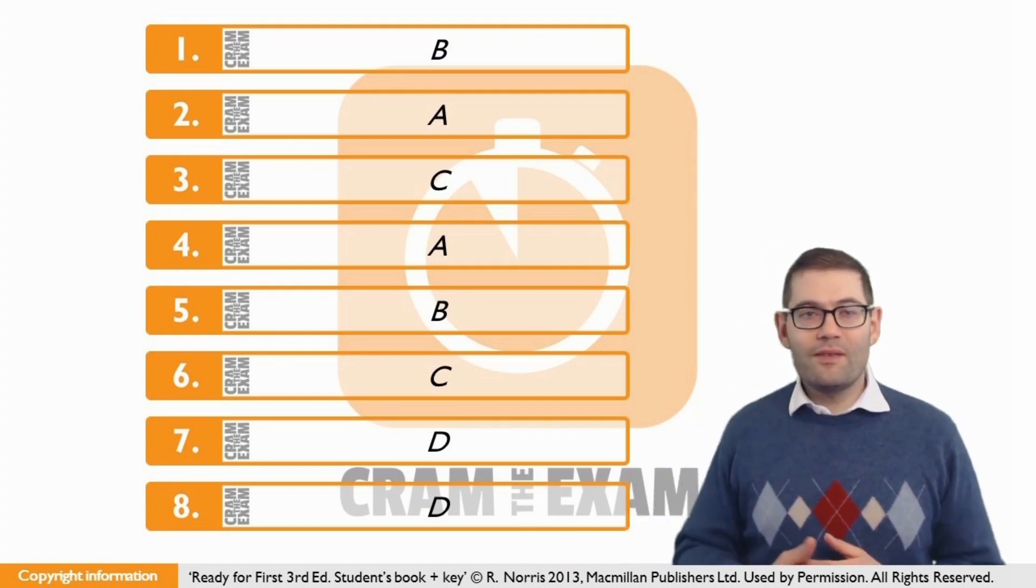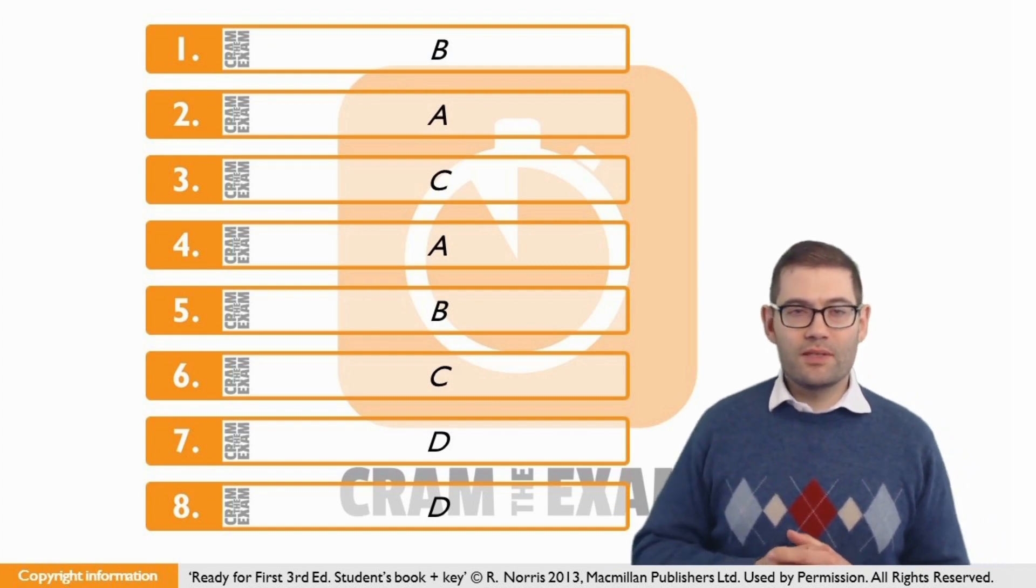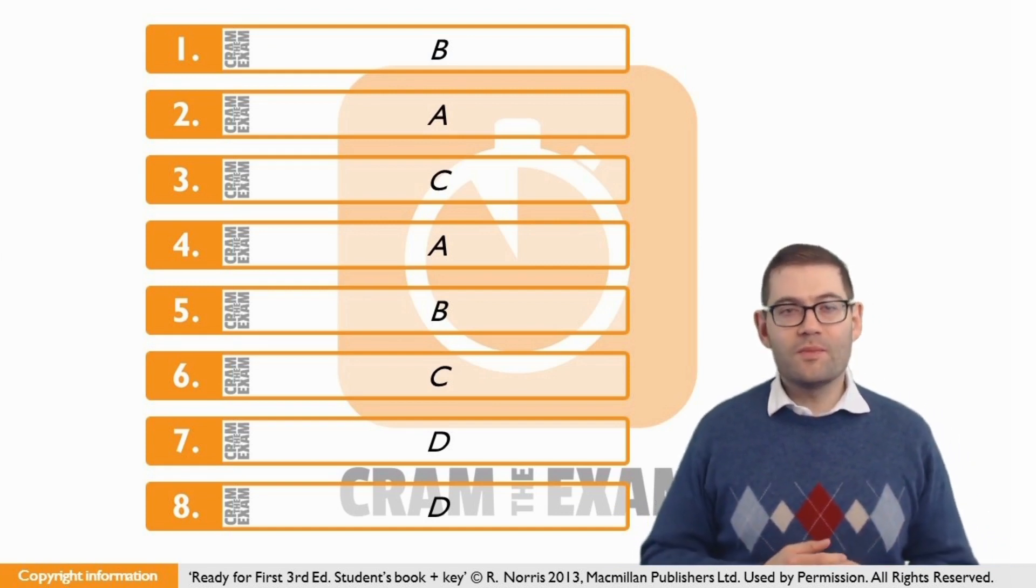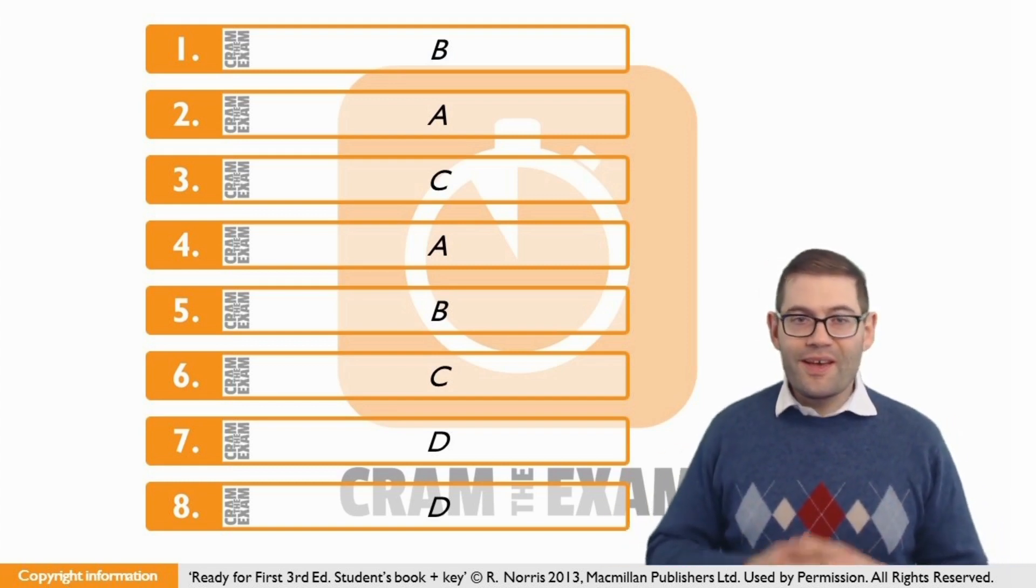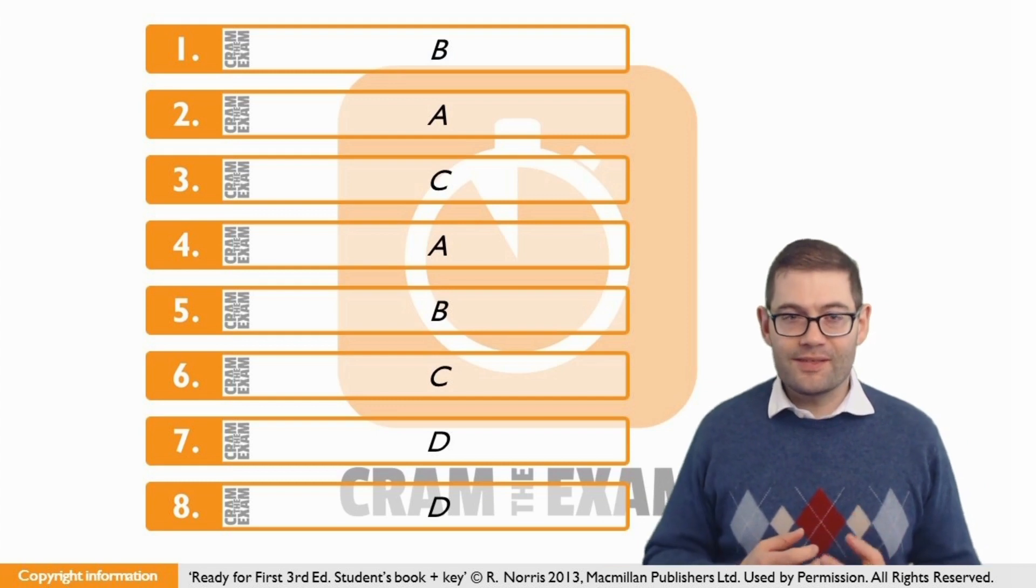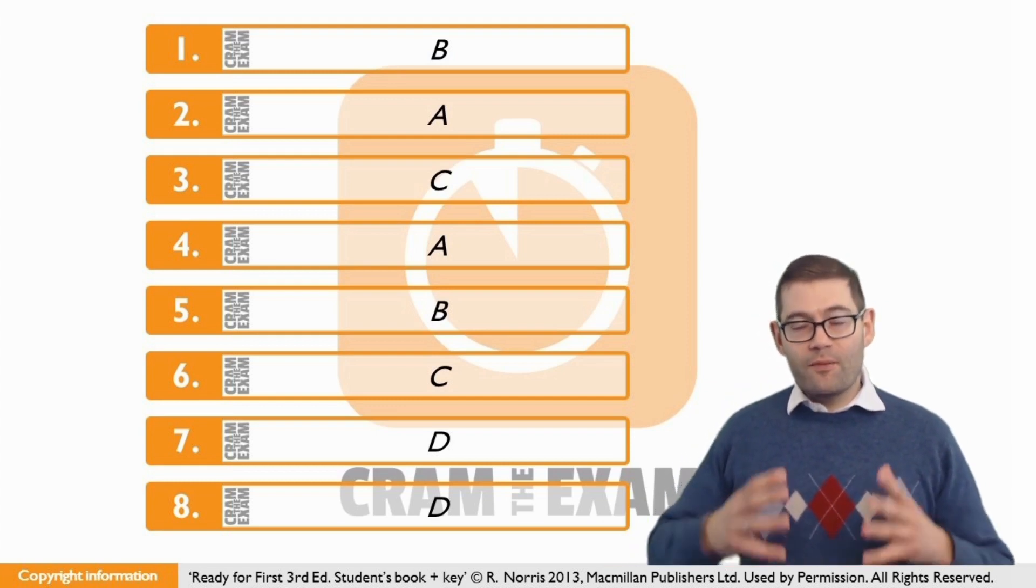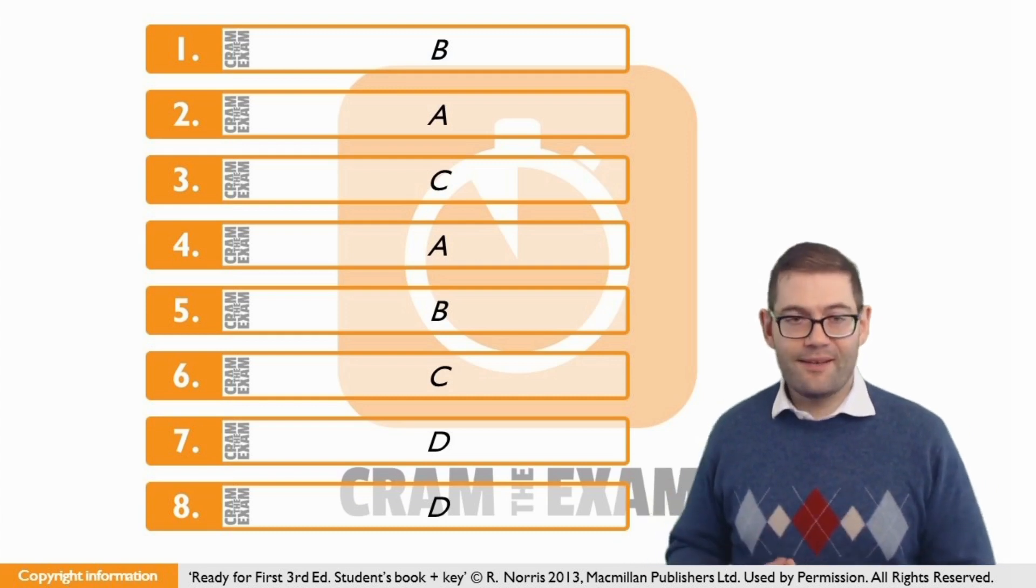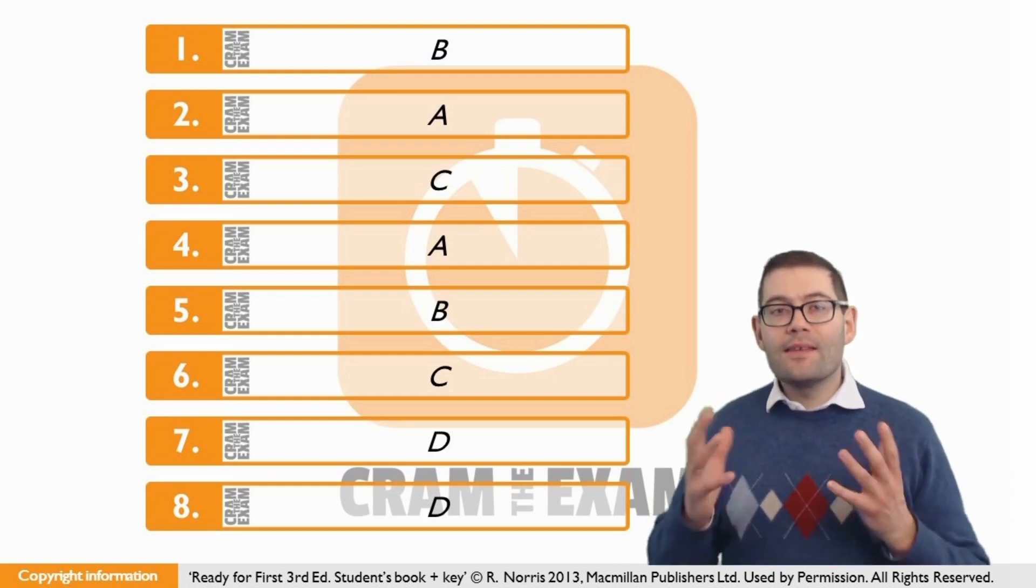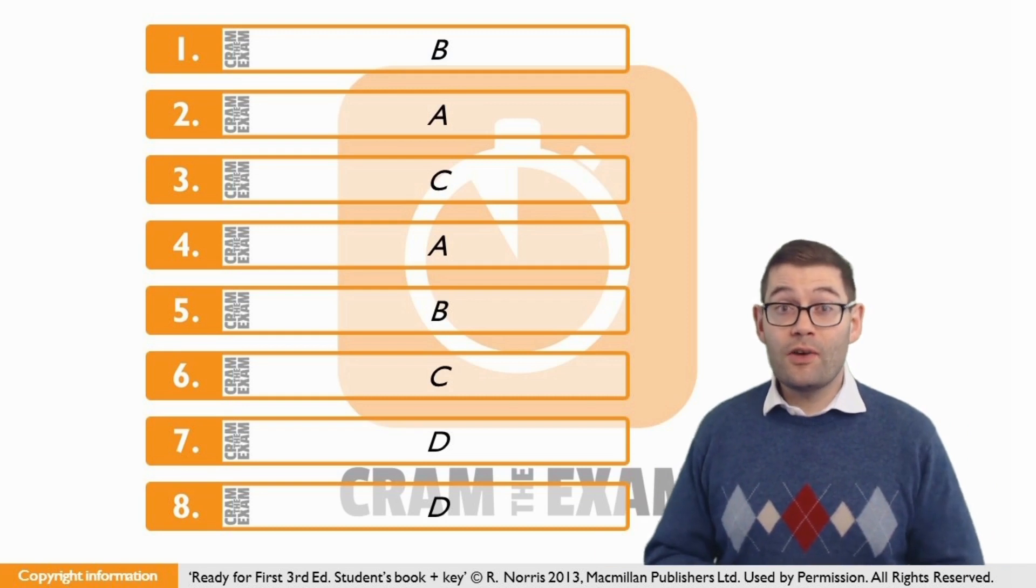For question number two, if we have a look after the gap, we can identify the preposition 'to,' which might help us a little bit in terms of working out which answers we can choose. But what really will help us is the context, and the context tells us that we're talking about a person who really wants to concentrate on one particular thing. If that's the case, the only answer that we can choose is A, devote.